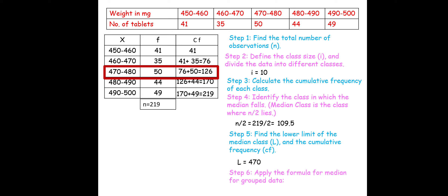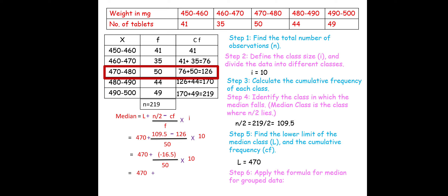Step 6: apply the formula. Median = L + [(N/2 − CF) / F] × i = 470 + [(109.5 − 76) / 50] × 10. Solving: 470 + [33.5 / 50] × 10 = 470 + 0.67 × 10 = 470 − 3.3 = 466.7. So 466.7 is the median. This is how we use the formula.